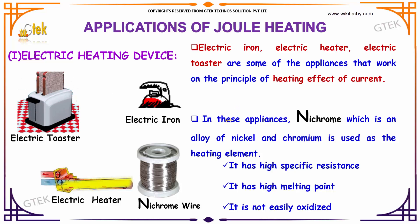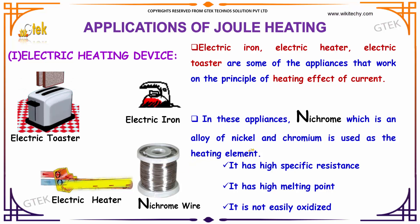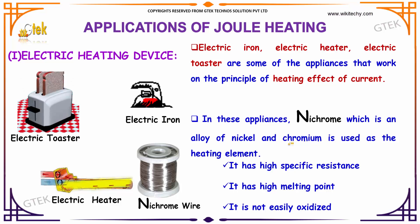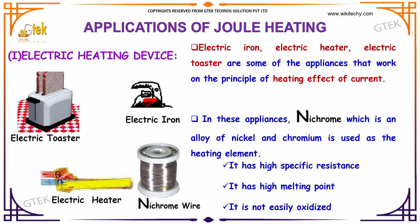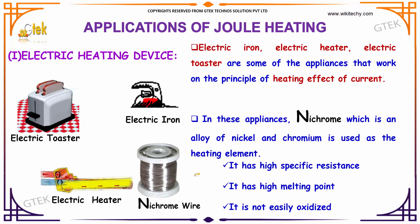In these appliances, Nichrome — which is an alloy of Nickel and Chromium — is used as a heating element. The reason is it has a high specific resistance, a high melting point, and it's not easily oxidized. That's why Nichrome is used.